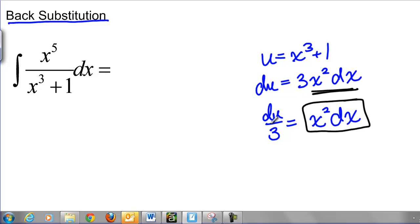The way we're going to do this is we're going to notice that on top of my integral I have an x to the fifth. Well, I can rewrite x to the fifth as x to the third times x squared.